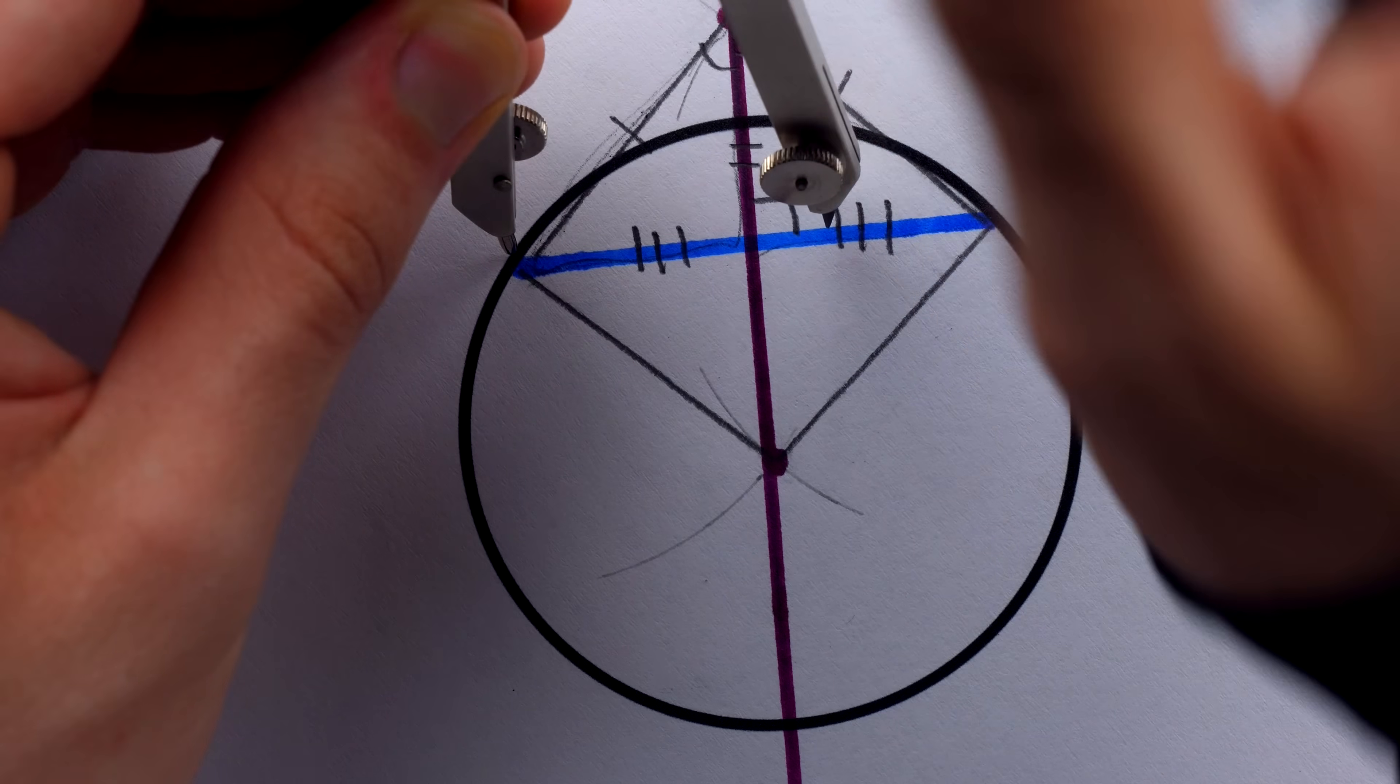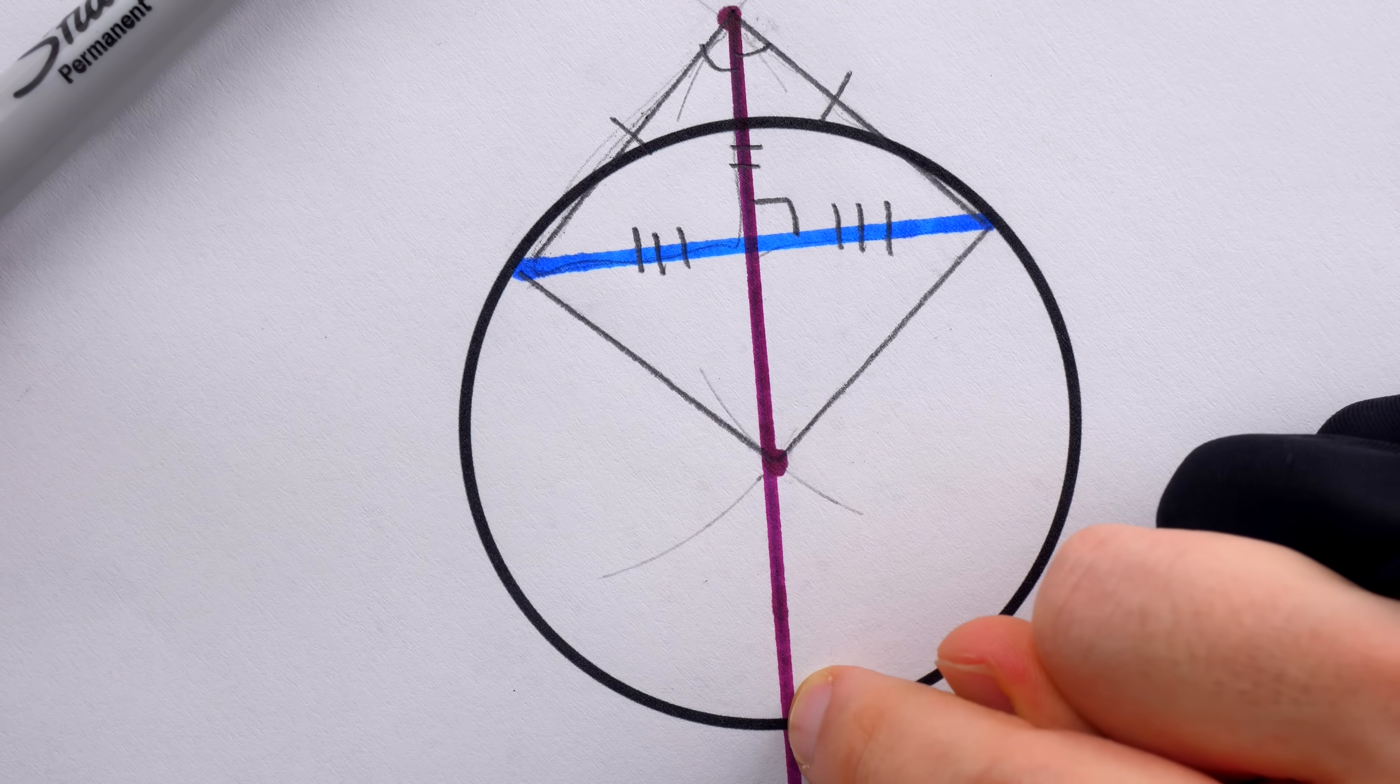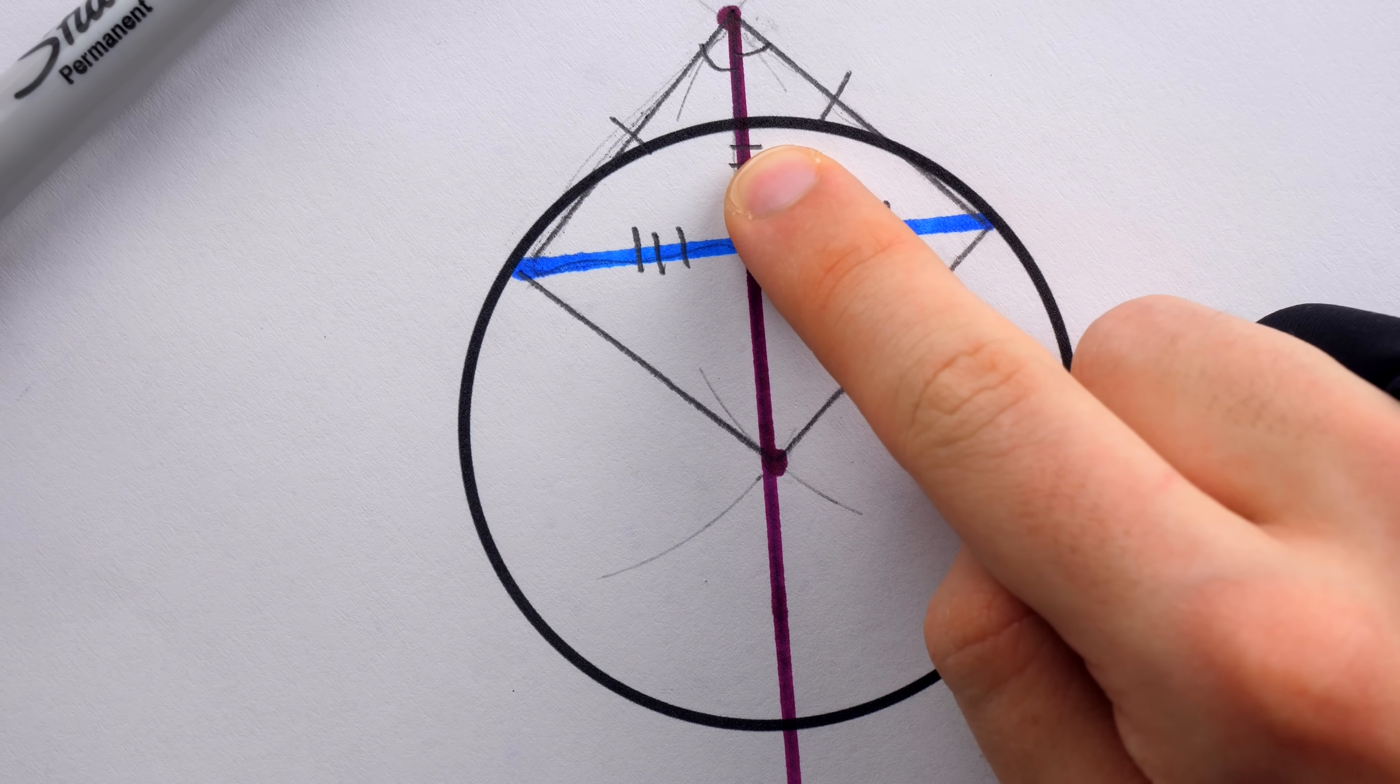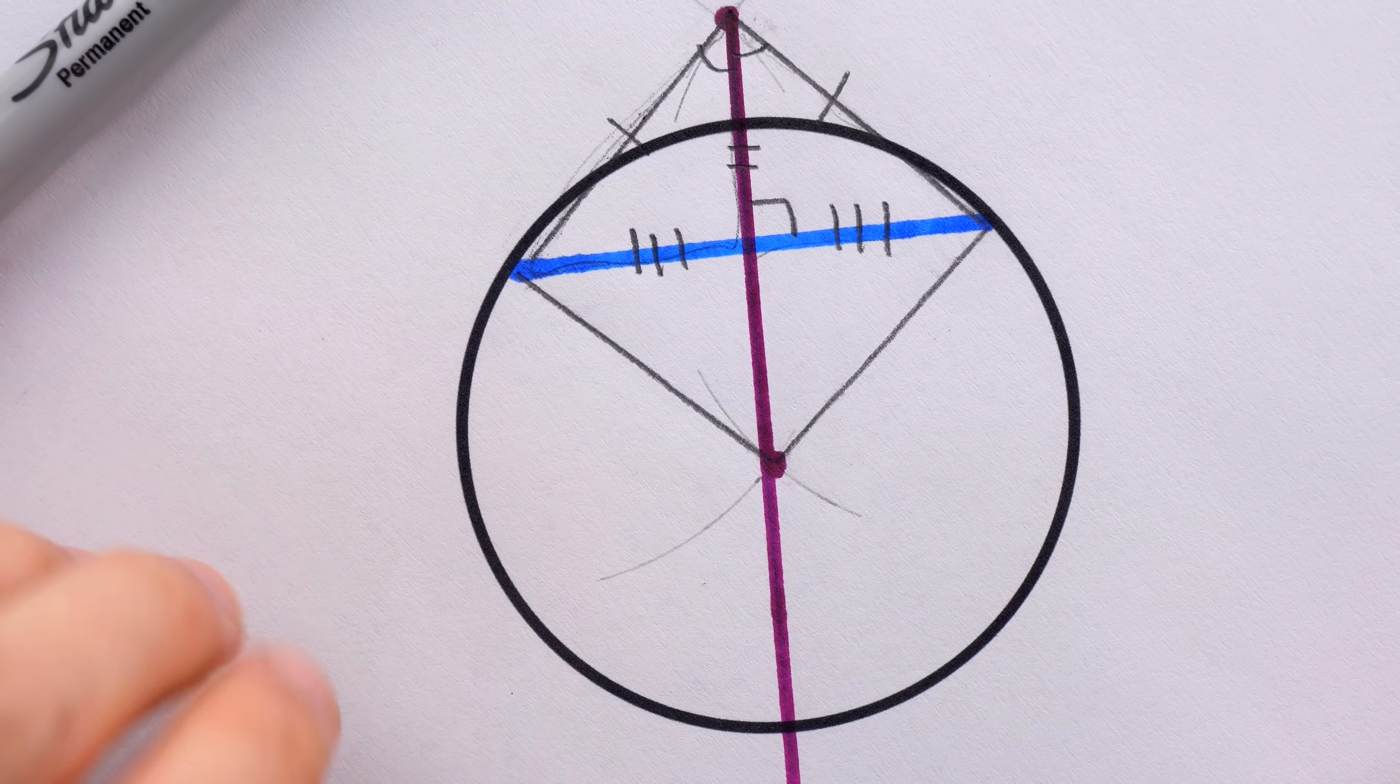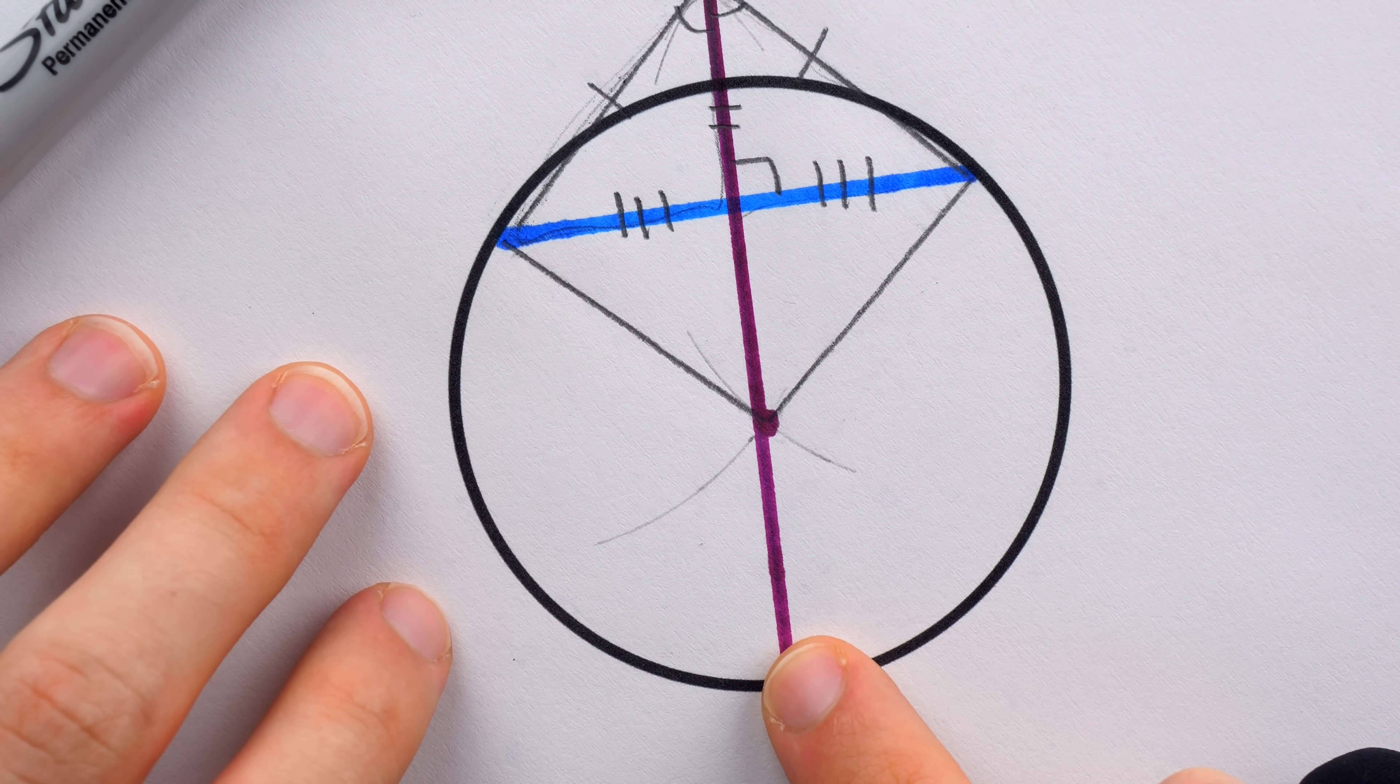It could have been longer. It could have been a bit shorter. It just had to be more than half of this chord. So for sure now, we have a diameter. This segment passes through the center of the circle, but to actually find the center, all we need to do is repeat this construction, because a second diameter of the circle is going to intersect this one at the circle's center.